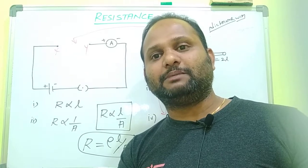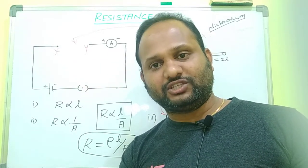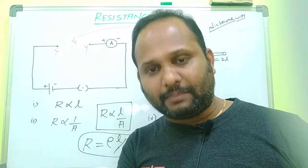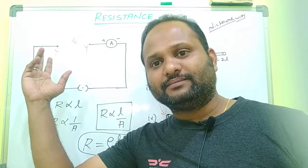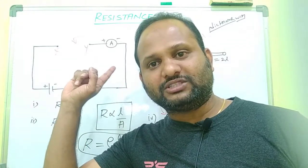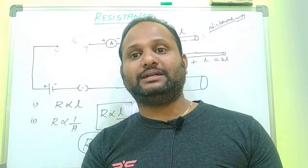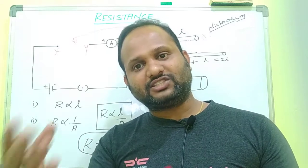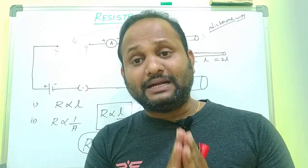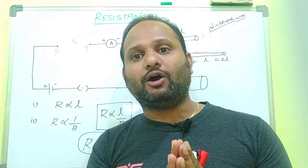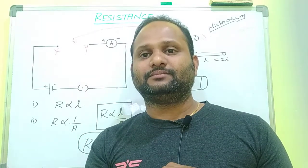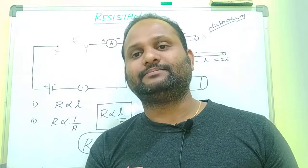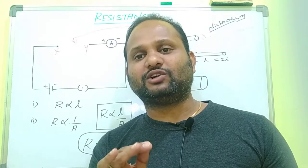Nichrome is an alloy made of nickel and chromium. So the resistivity of nichrome is different from copper. When we replace nichrome wire with copper wire of the same length and area of cross-section, the ammeter shows a different reading because the resistivity is different for different metals. The resistivity of gold is different from copper. Resistivity is constant for a particular substance — this is an important point.